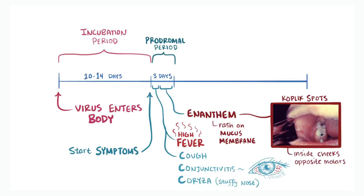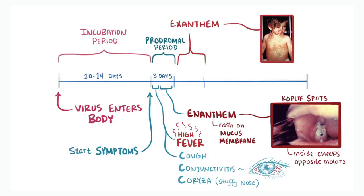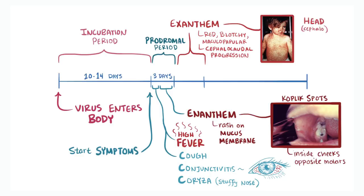After these initial prodromal symptoms comes the exanthem phase, where a red, blotchy, maculopapular rash spreads in a cephalocaudal progression. In other words, the exanthem starts at the head, or cephalo, and spreads to the extremities, or ends of the body, caudal.